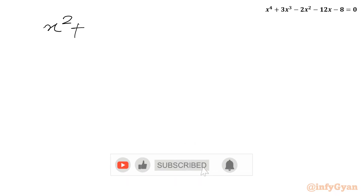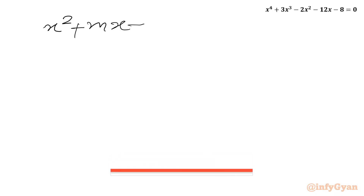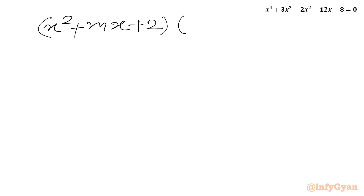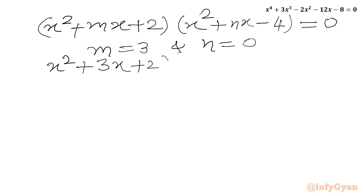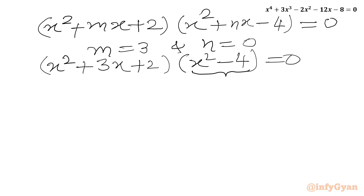Plugging M = 3 and N = 0 back into our factored form: (x² + 3x + 2)(x² + 0·x − 4) = 0, which simplifies to (x² + 3x + 2)(x² − 4) = 0. We can apply the difference of two squares formula to the second bracket and factorize the first bracket easily.